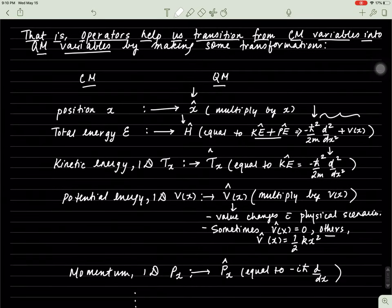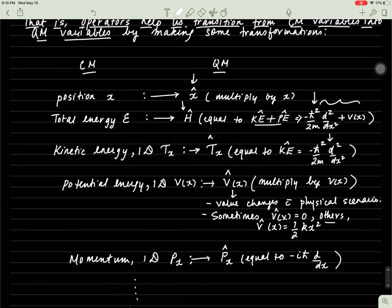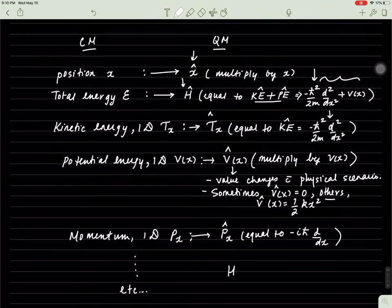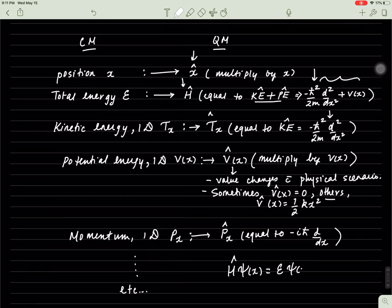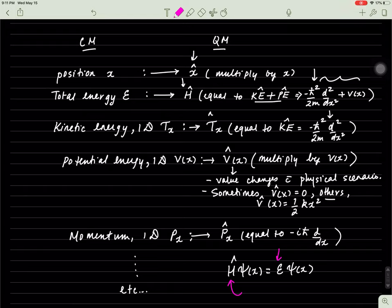The important thing to note is that in quantum mechanics, for every linear operator — for instance, this — for every observable, for instance energy, the total energy of the system, which is an observable classical mechanical quantity, for every observable there corresponds a linear operator. In this case, it's the Hamiltonian operator. This is why we care about operators — they help produce results that are meaningful in quantum mechanics.